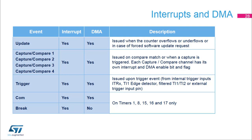This slide lists the interrupts and DMA request sources. Most events are able to generate either an interrupt or a DMA request, or even both simultaneously. The update is issued when the counter overflows or underflows, mainly used to refresh the timer's runtime settings at the beginning of the PWM period. The repetition counter allows you to skip some PWM periods and decrease the number of interrupts or DMA requests at high PWM frequency. Each of the four capture and compare events have their own interrupt and DMA. A trigger event on TRGI can also trigger an interrupt or DMA request. Additional sources include commutation and break events on timers 1, 8, 15, 16, and 17 only. Note that the break event does not generate DMA requests.